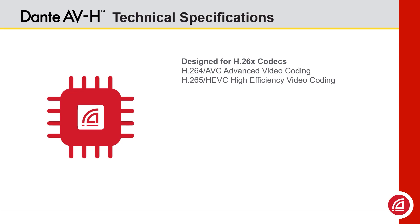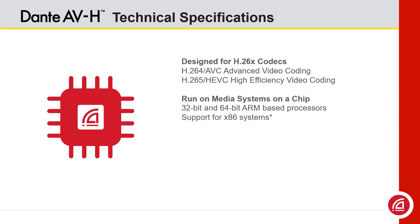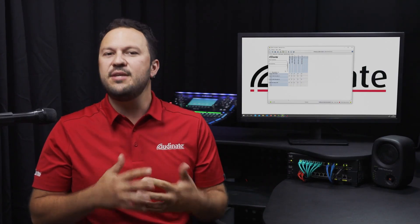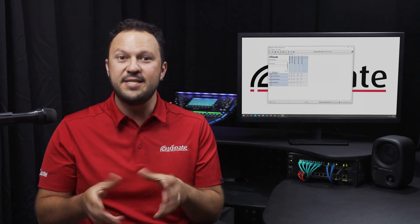H.264 and H.265 are also referred to as AVC (Advanced Video Coding) and HEVC (High Efficiency Video Coding) respectively. Dante AVH is designed to work with systems-on-chips running 32 or 64-bit ARM-based processors, with support for x86 systems in the future. It supports resolutions of your existing H.264 or H.265 flows up to 4K at 60 frames per second. The license comes with one video channel and two or eight audio channels, and as with Dante audio devices, the codec must match between AV devices.